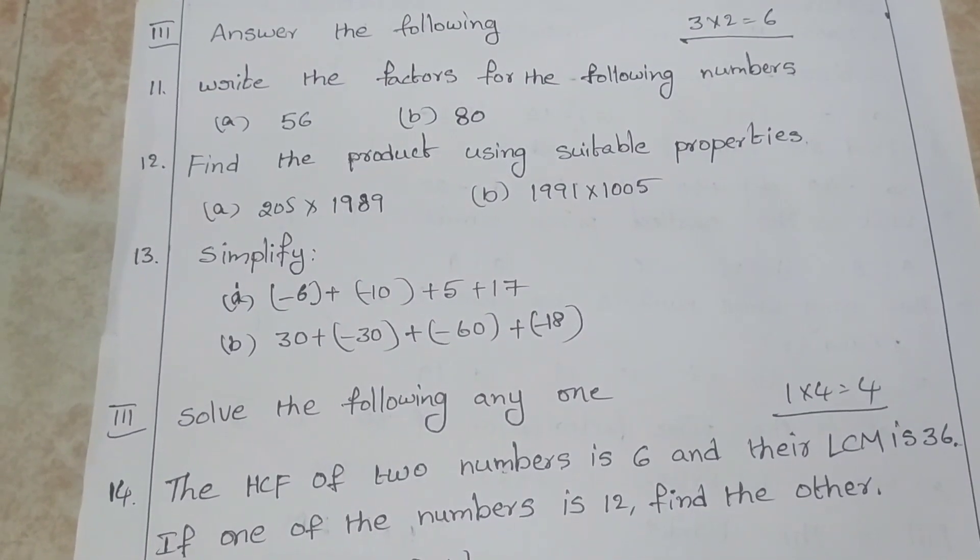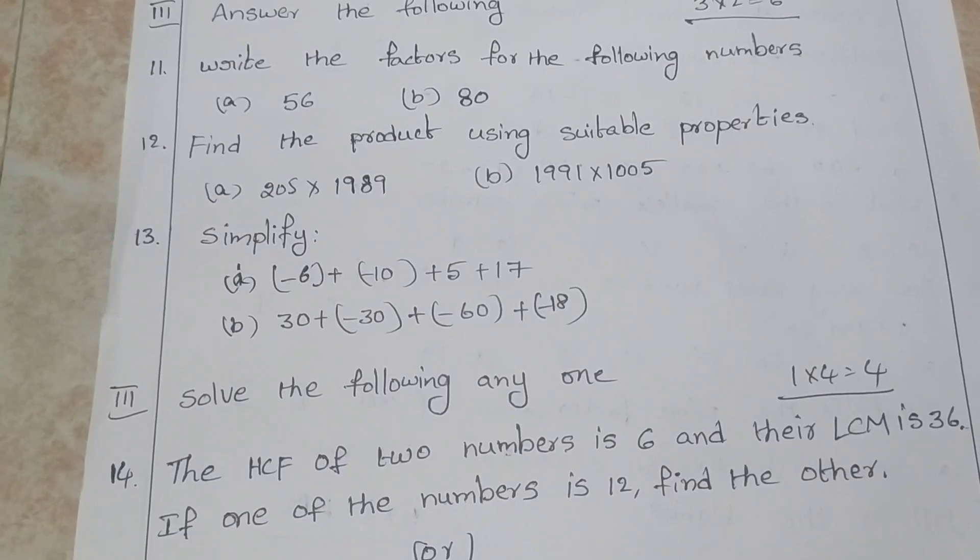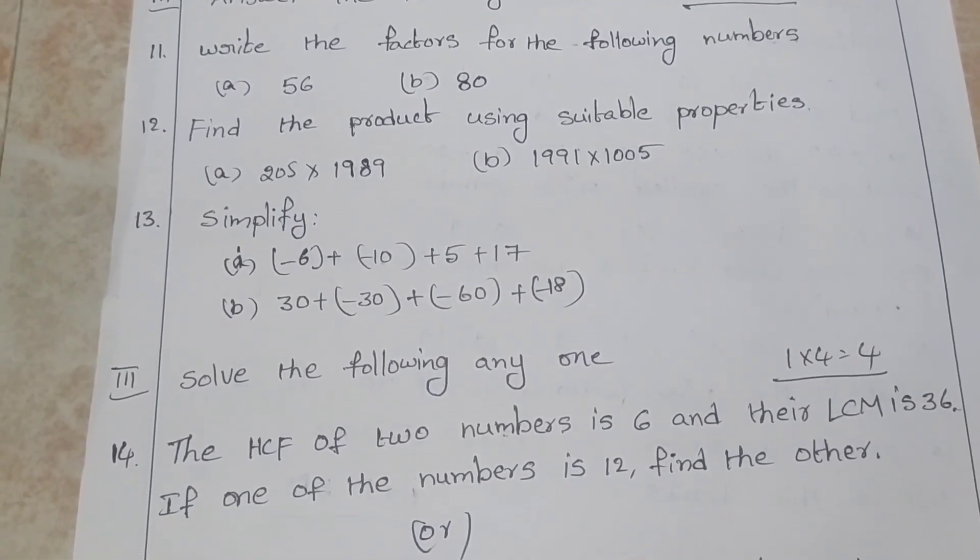Simplify: -6 + -10 + 5 + 7. 30 + -30 + -60 + -18.